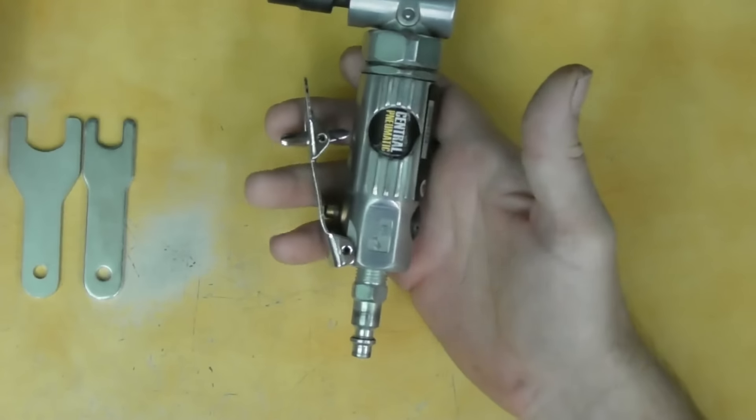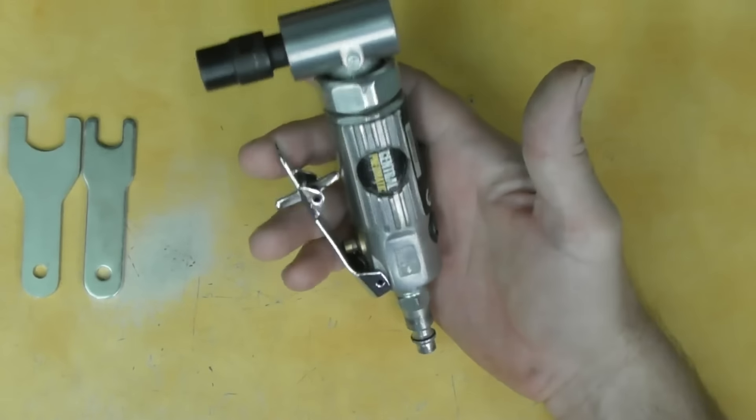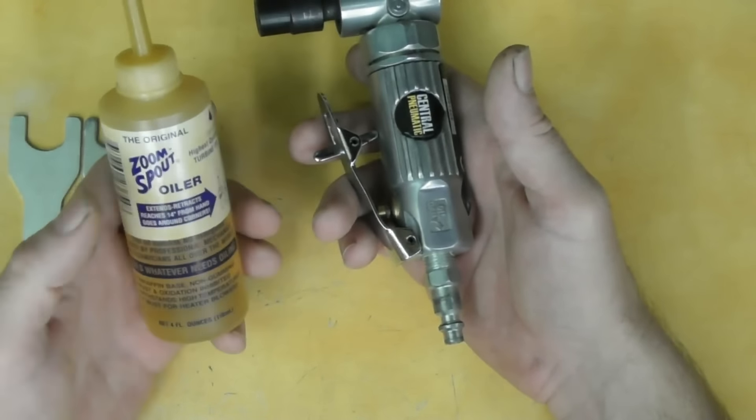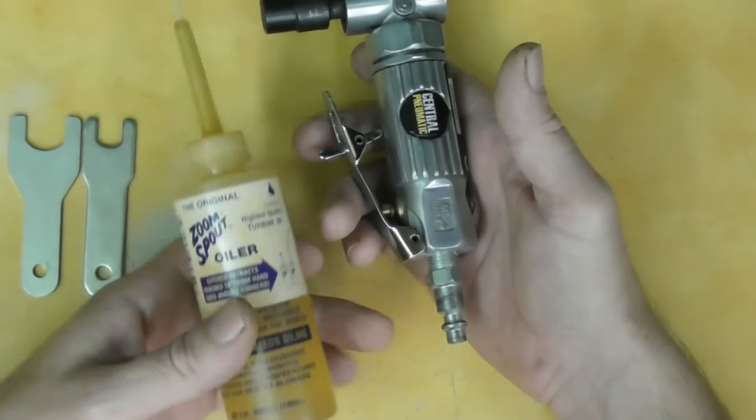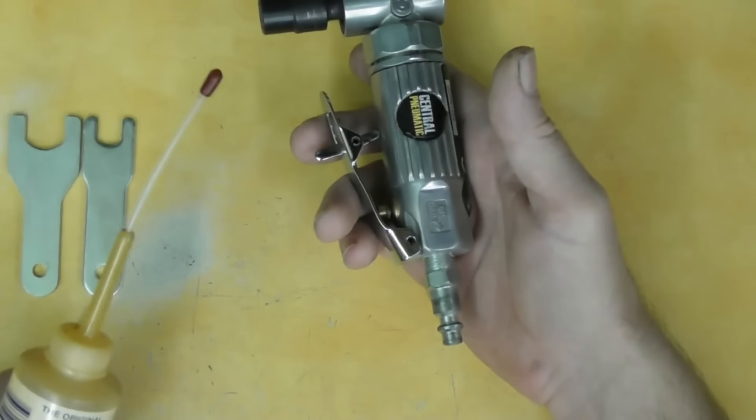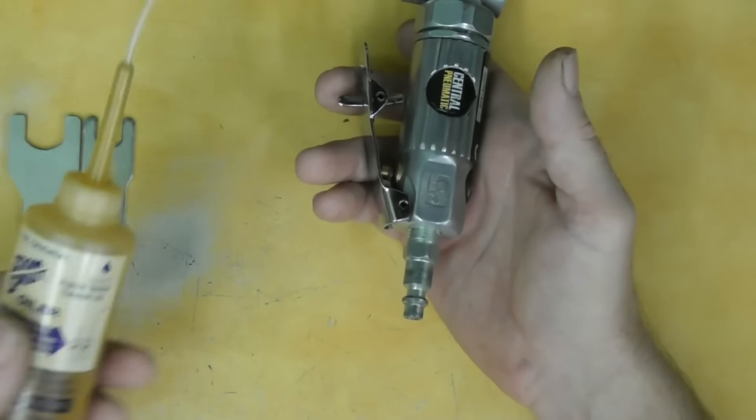Runs really good, runs really strong for what it is. You do need to oil it daily. I personally use this Zoom Spout oiler with the oil that it comes in. You can pick this up at the hardware store for three, four, five bucks. It's got a nice spout on it, you can get down into places where you can't with regular bottles.